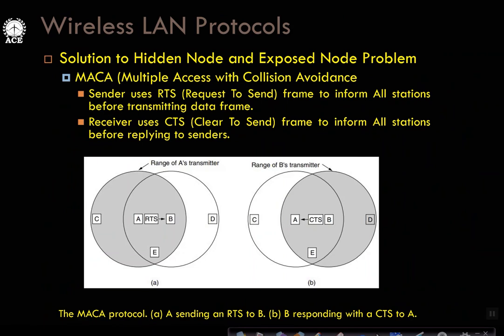From the Tanenbaum textbook: the solution to hidden node and exposed node problem using MACA protocol. A and B are within radio range; D is not within A's range; C is within the radio range of A; E is within the radio range of both A and B. When sender A sends RTS, it will be heard by E and C. Since the destination station name is specified in the RTS, only B is supposed to respond. C and E should remain silent, thereby avoiding collision.